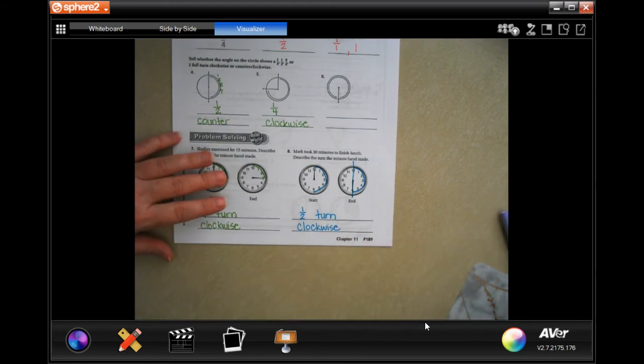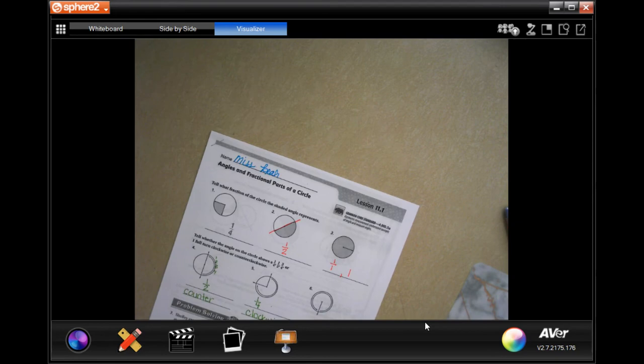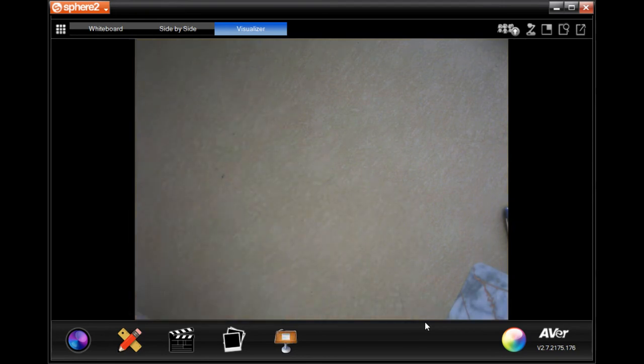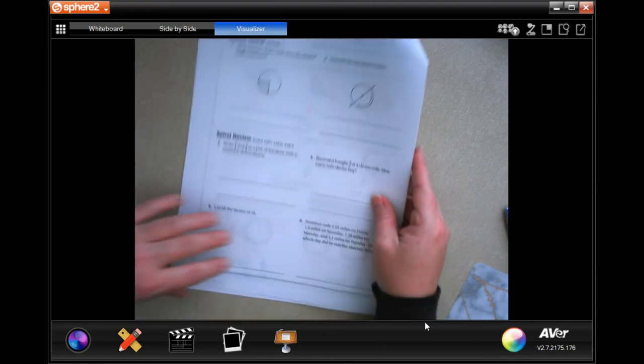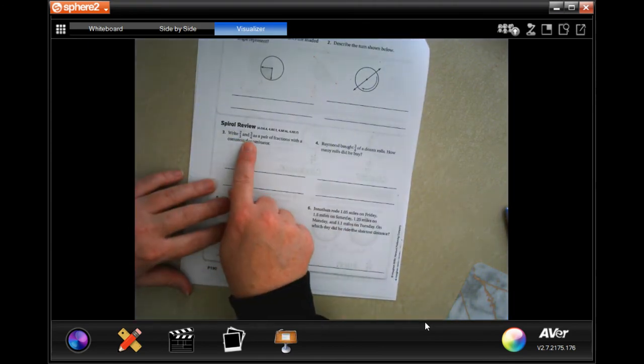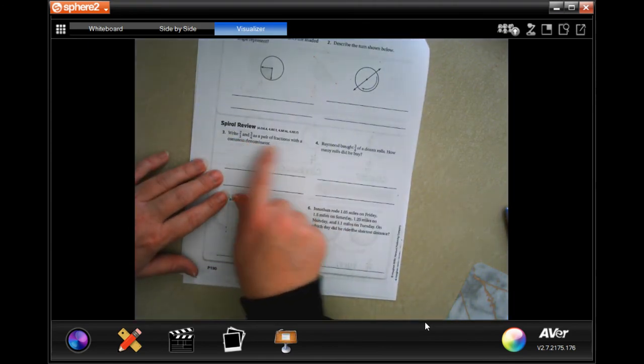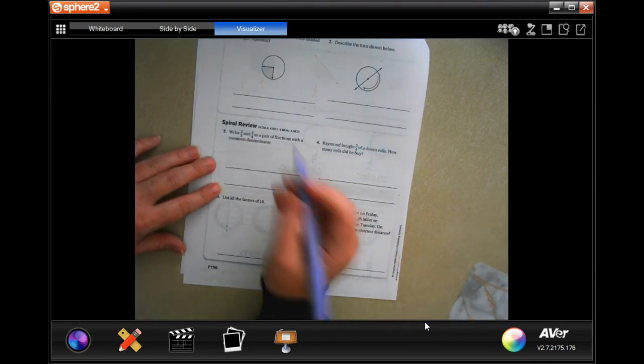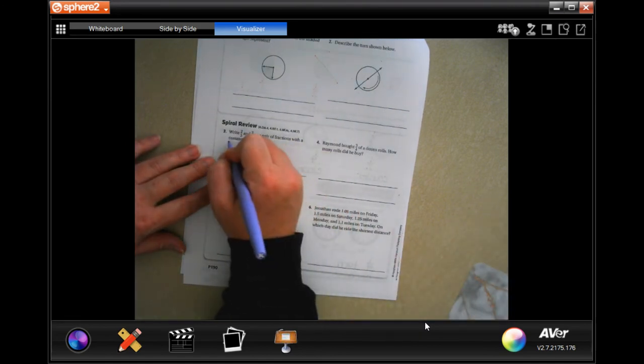All right, let's go on to the back. You guys are going to go ahead and do the lesson check just like always, and we're going to go down and do this for our review. It says to write two thirds and three quarters as a pair of fractions with a common denominator. Well, the smallest common denominator between three and four, let's find out.